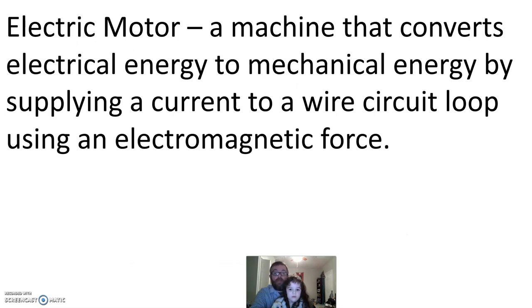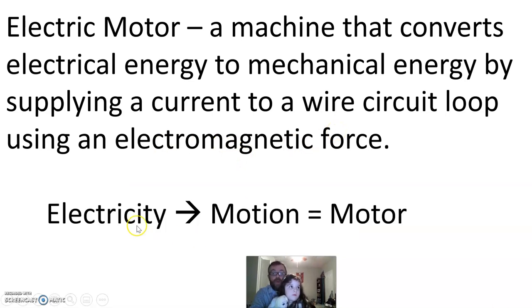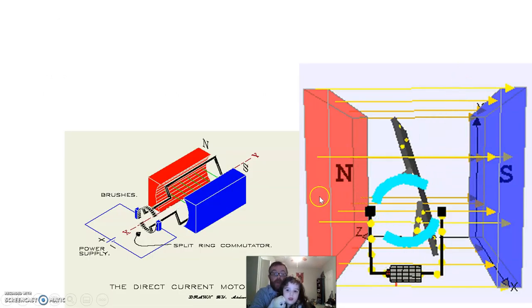So, a motor is a machine that converts electrical energy to mechanical energy. So, the reverse of what we've seen before. We have electricity. Now, we're going to make motion. We're going to supply current, electrical current, to a wire circuit loop using an electromagnetic force. We're doing everything sort of in reverse. When we have electricity to make motion, it's a motor. It moves. It's motoring something.